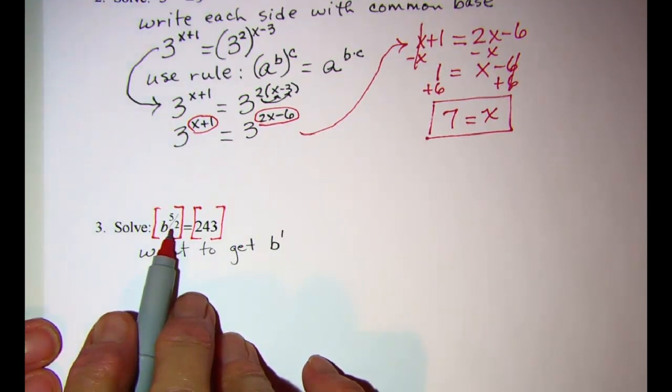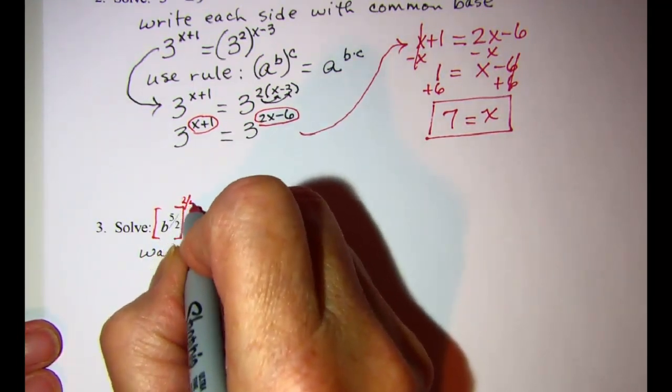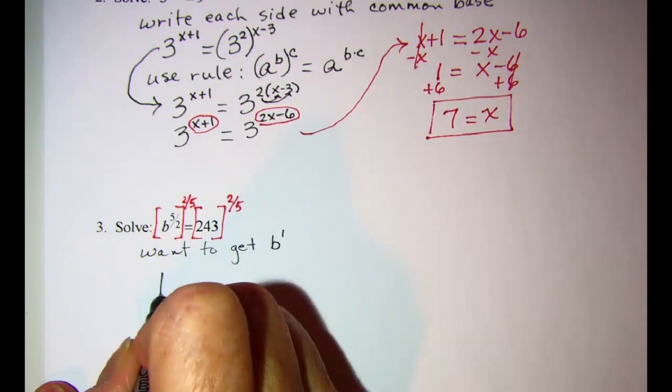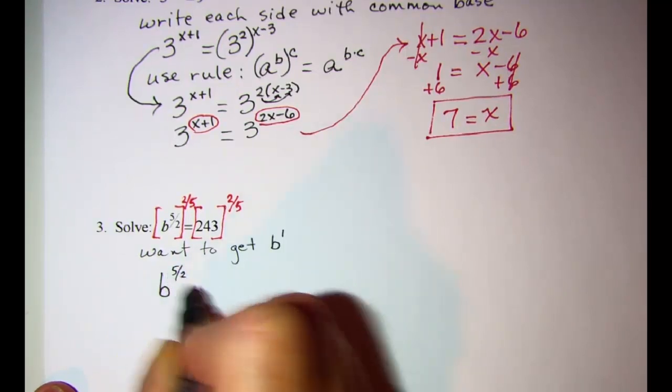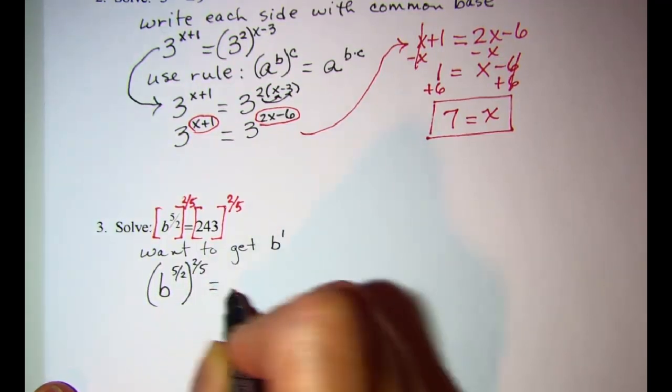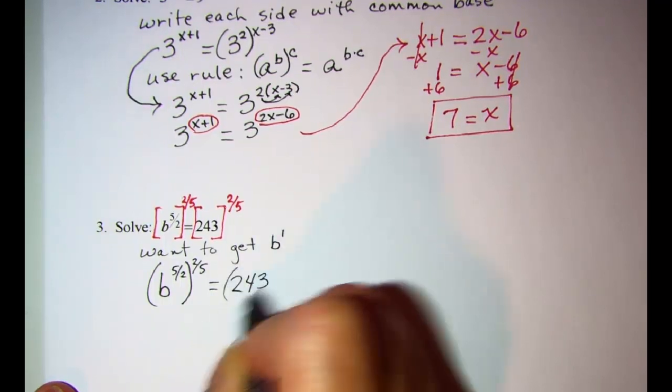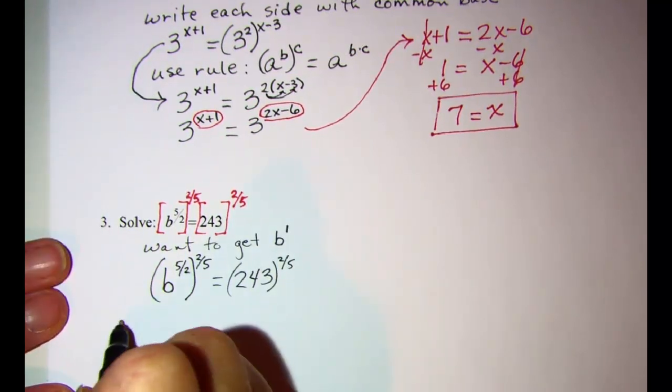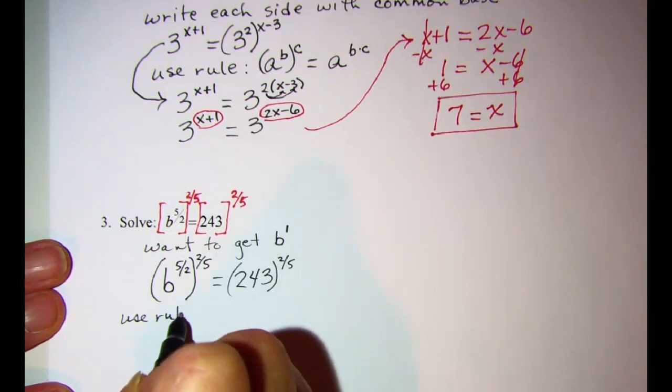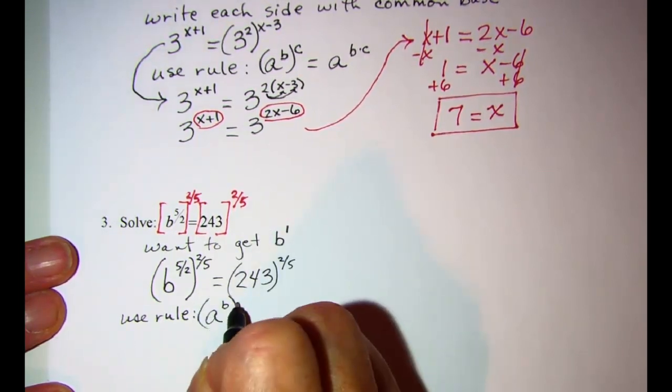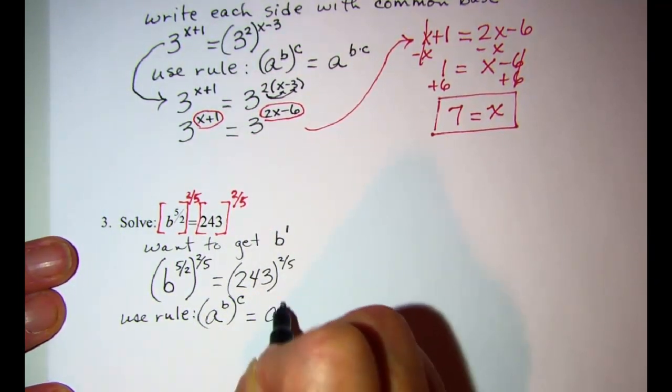So I'll raise both sides to the 2/5. 2/5 is the reciprocal of 5/2. So now I have (b^(5/2))^(2/5) = 243^(2/5). Now we can use the rule (a^b)^c = a^(bc).